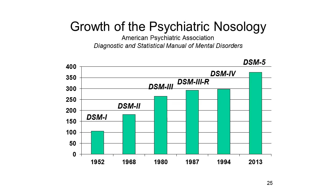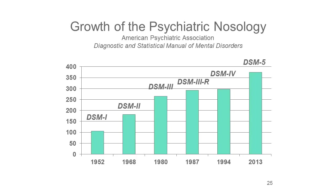The categories of mental illness have grown considerably since the latter part of the 19th century. The first edition of the Diagnostic and Statistical Manual, published in 1952, contained only about 100 diagnostic categories. The fourth edition, published in 1994, contained almost 300 categories. The latest edition, the fifth edition of the DSM, released in 2013, has almost 400.